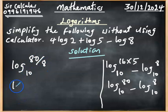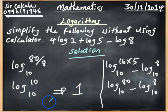So we have log (80 divided by 8 is 10) base 10. When the power and base are the same, the answer is always 1. So this is our answer here.